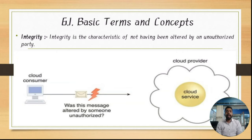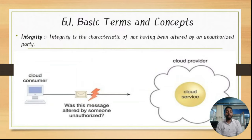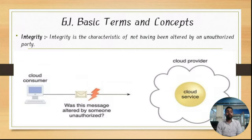The second term is integrity of your data. Integrity is a characteristic of data not having been altered by an unauthorized party. Just as confidentiality means no one can read the data without authorization, integrity means no unauthorized party can alter the data. An important issue concerning data integrity in a cloud is whether the cloud consumer can be guaranteed that the data transmitted to a cloud service matches the data received by the cloud service.